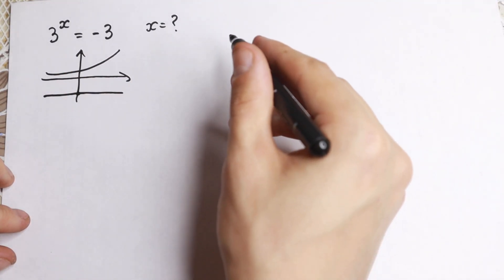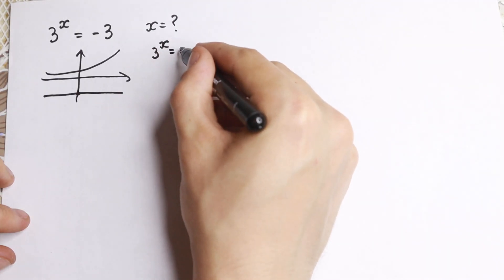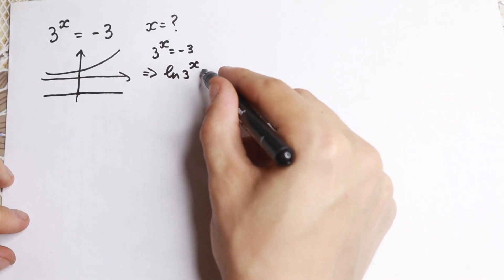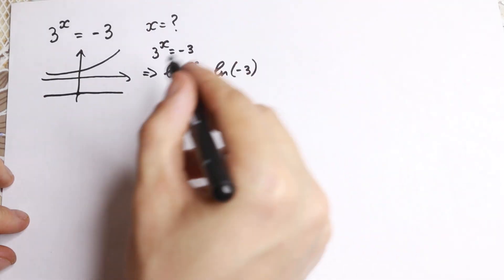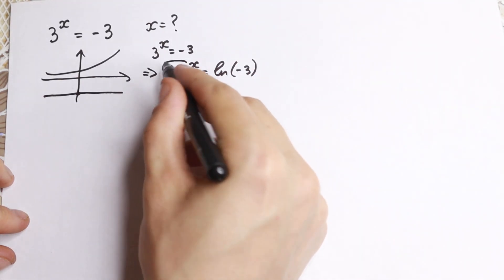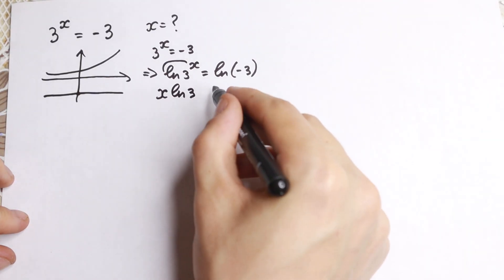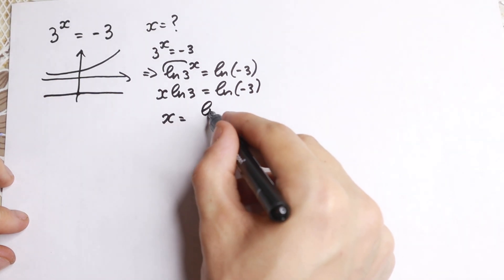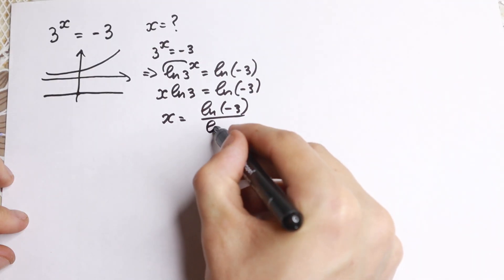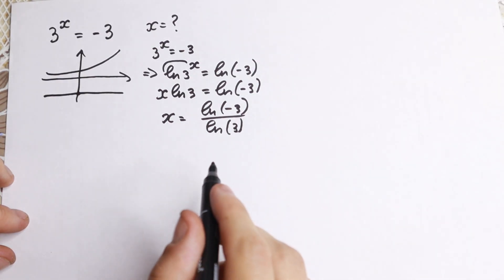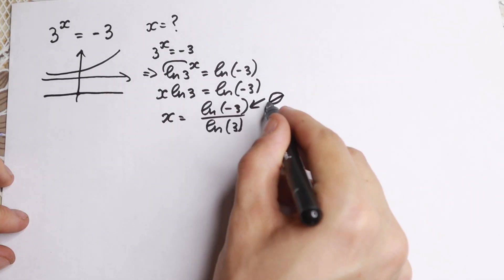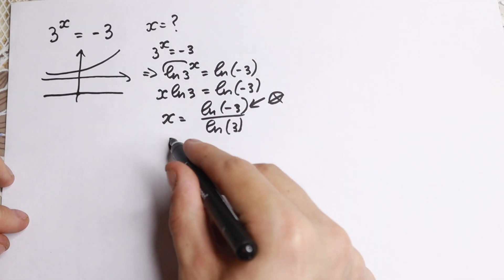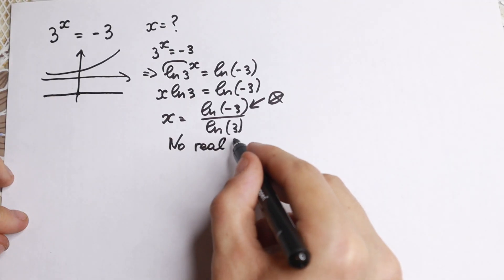If we use algebra, we have 3 to the x equal to minus 3. Taking the natural log on both sides, we get natural log of 3 to the x equal to natural log of minus 3. The x jumps in front, giving x times natural log 3 equal to natural log of minus 3. So x equals natural log of minus 3 over natural log 3. Since natural log of minus 3 has no real value, there is no real solution.